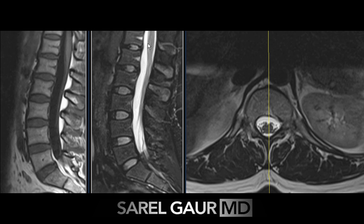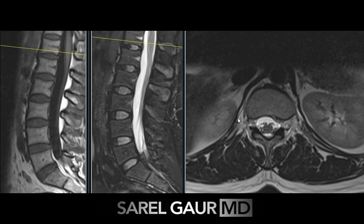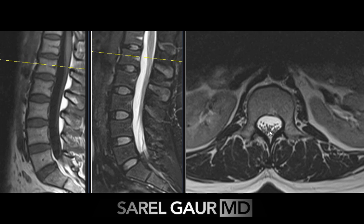I then move on to the cord. I'm looking for any masses within the cord, any enlargement of the cord, or any abnormal signal within the cord. I'm looking at how the cord terminates into the cauda equina. I can use the axial images to help me find the termination — the conus. Here's my conus, and that's going to be at the L1 level.